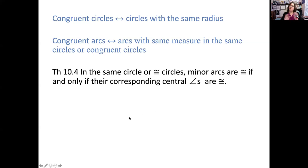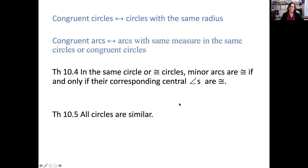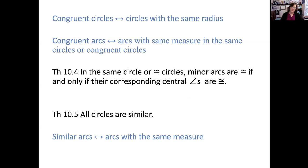This is something that will make a lot of sense to you — knowing one equality or congruence gives us another. Notice it's a biconditional, so it reads both directions: in the same circle or congruent circles, minor arcs are congruent if and only if their central angles are congruent. All circles are similar because they all have the same shape, and arcs are similar if they have the same measure. They're only congruent if they have the same measure and essentially the same radius.